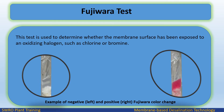Fujiwara test: This test determines whether the membrane surface has been exposed to an oxidizing halogen such as chlorine or bromine. An example shows a negative photo on the left and a positive photo on the right, demonstrating the Fujiwara color change.